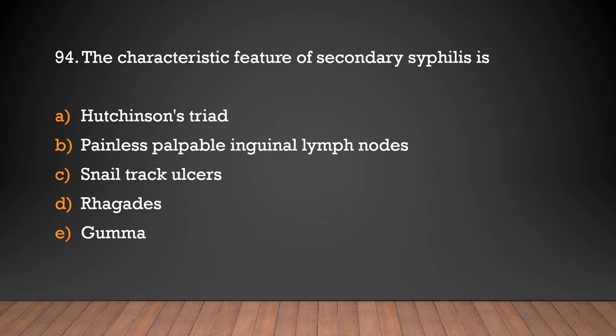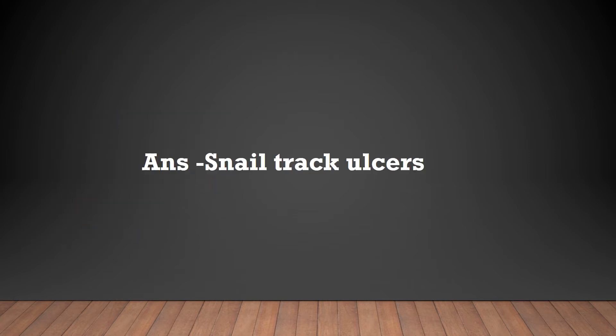The characteristic feature of secondary syphilis is: Hutchinson's triad, painless palpable inguinal lymph nodes, snail track ulcers, Ragadas, Gamma. Answer: Snail track ulcers.